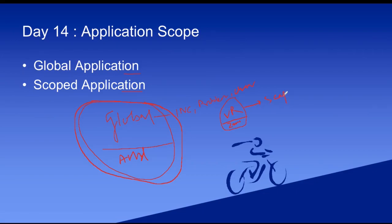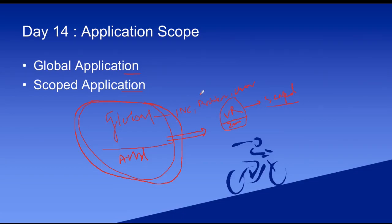ServiceNow first has the global application, and if you want to install something additional, you can use a scoped application. When you install Zoom, it needs some access to the system — like user information and mic permission. Similarly, when you install a scoped application, it can read some input from the global application, like user information or CMDB CI information. But the global application and the scoped application are both separated — they are isolated from each other.